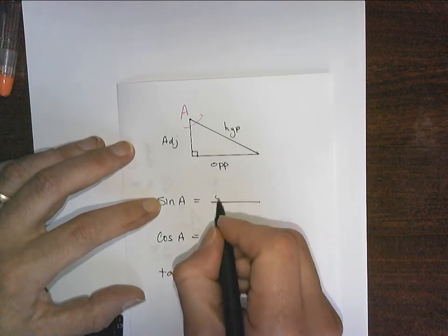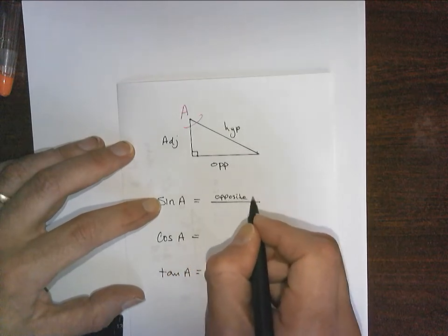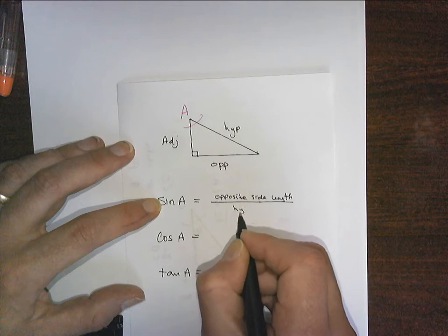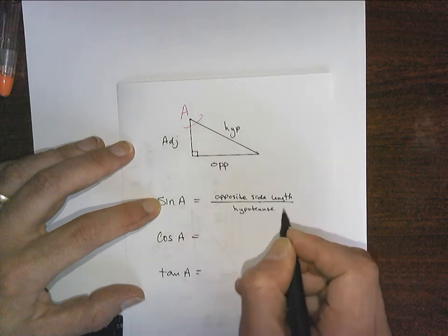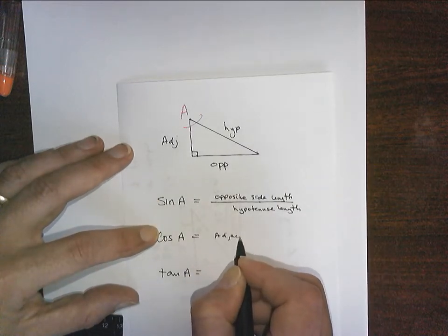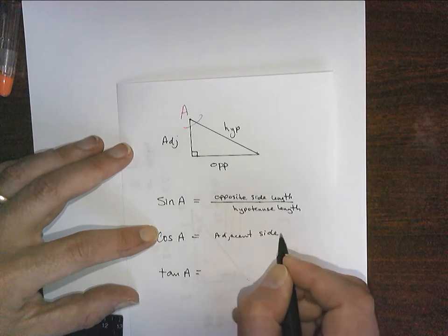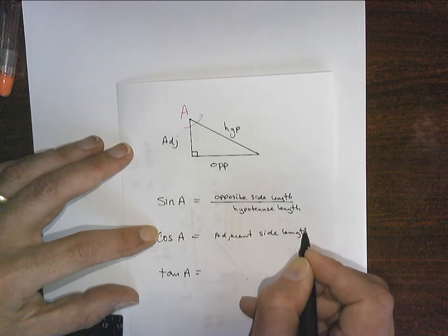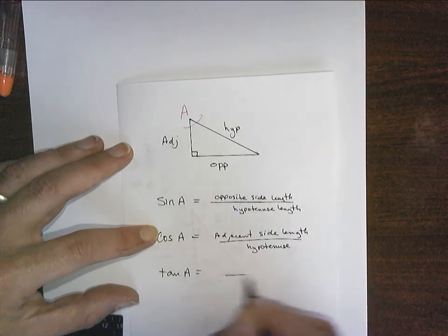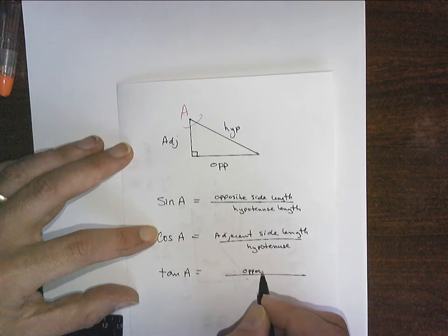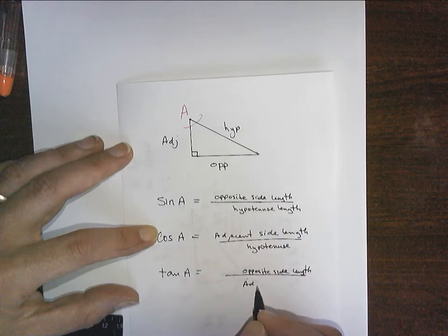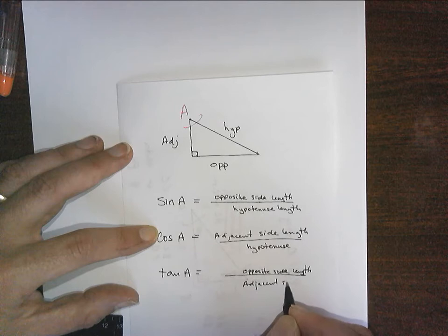And they are the division of the opposite side length divided by the hypotenuse length. And this one is adjacent side length divided by hypotenuse length. And this one is opposite side length divided by adjacent side length.